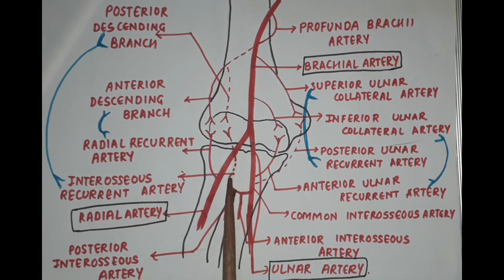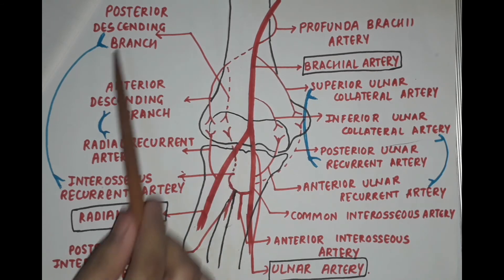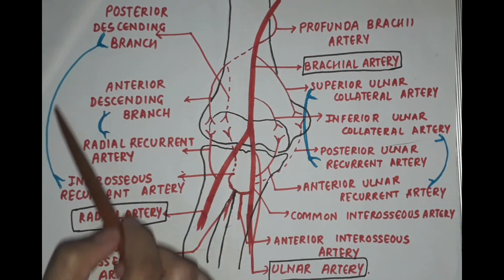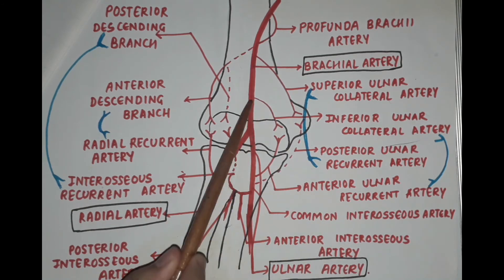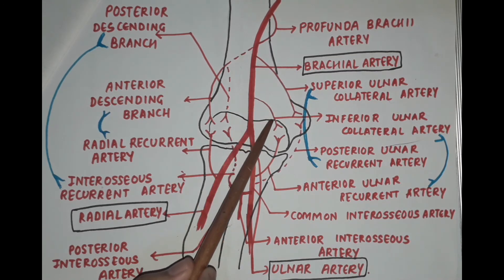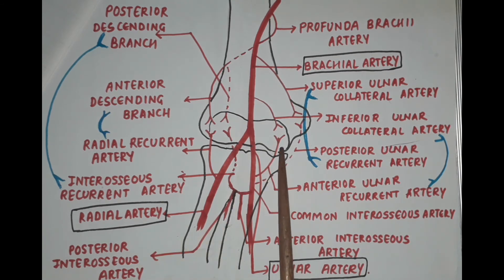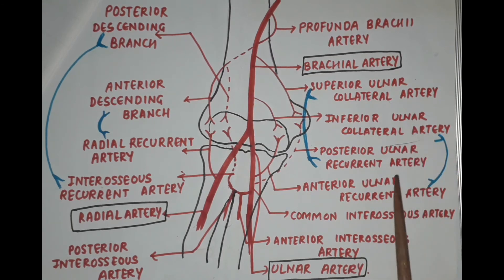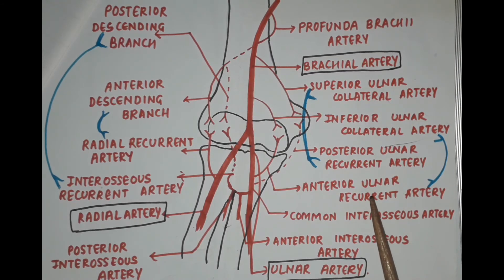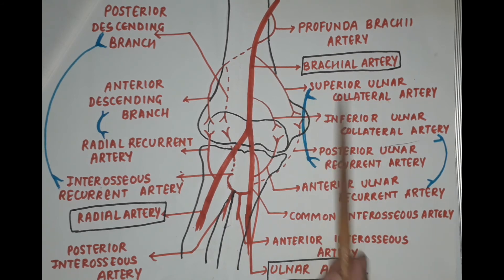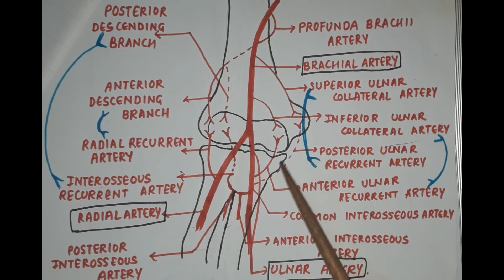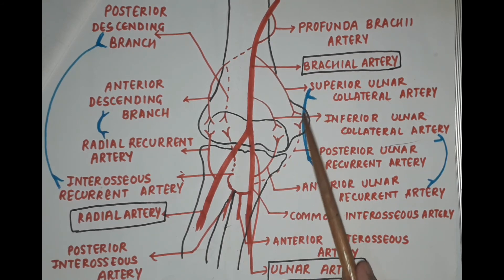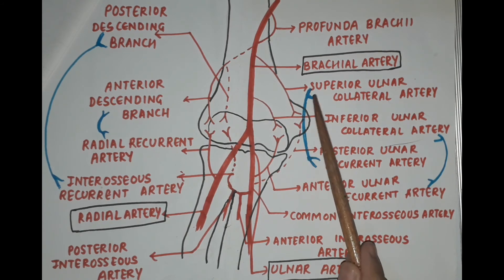Behind the lateral epicondyle, the posterior descending branch of the profunda brachii artery anastomoses with the interosseous recurrent branch of the ulnar artery. In front of the medial epicondyle, the inferior ulnar collateral artery — also known as the supratrochlear artery — anastomoses with the anterior ulnar recurrent artery. Behind the medial epicondyle, the superior ulnar collateral artery anastomoses with the posterior ulnar recurrent artery.